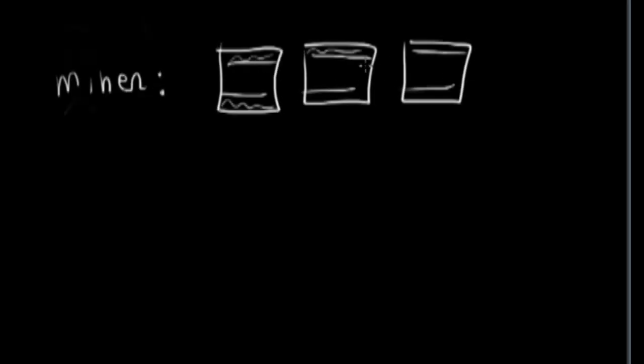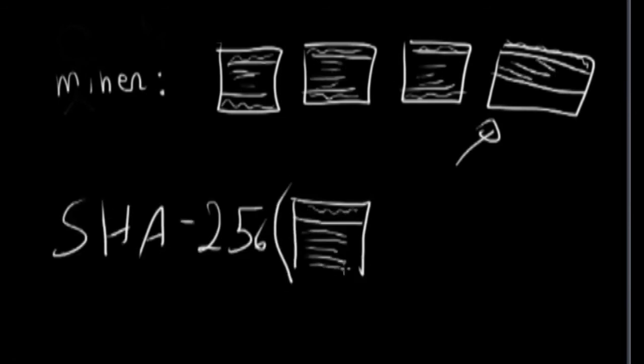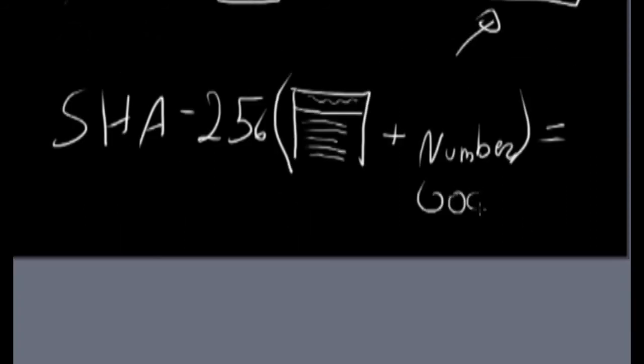So this miner with the earliest blockchain has to find a certain number so that when you apply SHA-256 in it, with the info of the block, you get an output beginning with a certain amount of 0 bits.